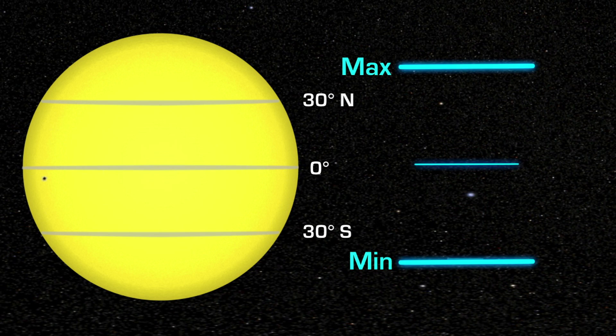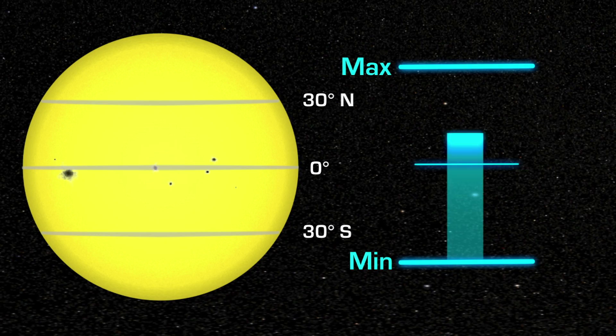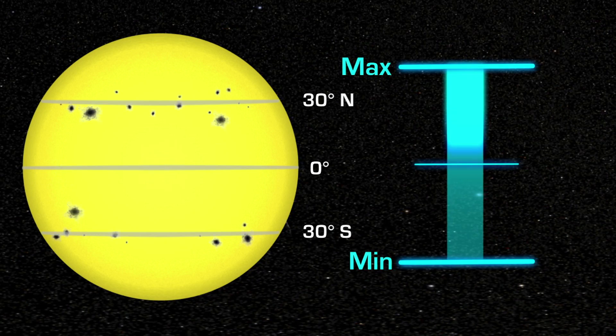At solar minimum, there are sometimes no sunspots to observe. At solar maximum, there can be many at the same time.